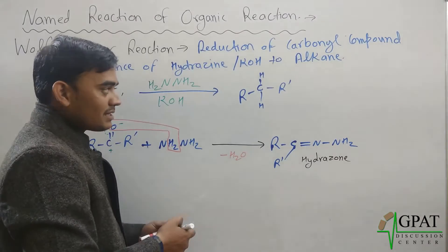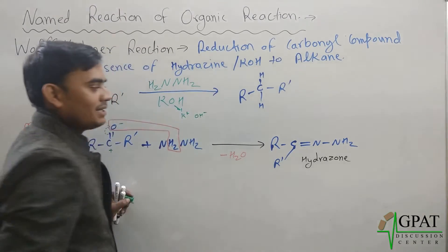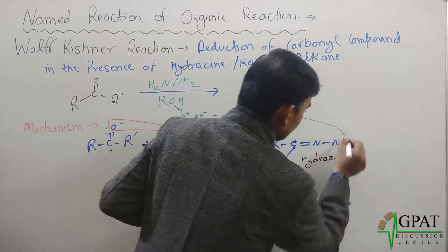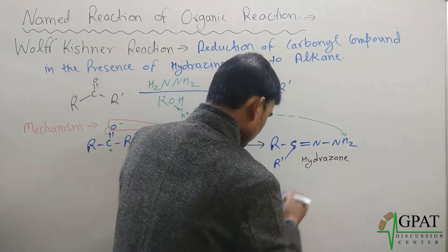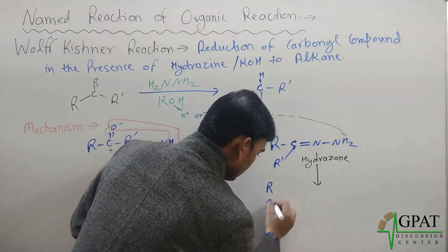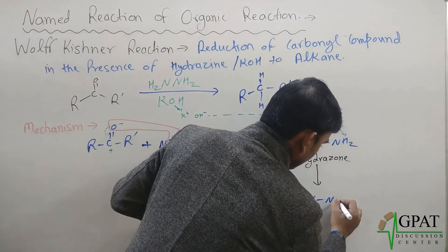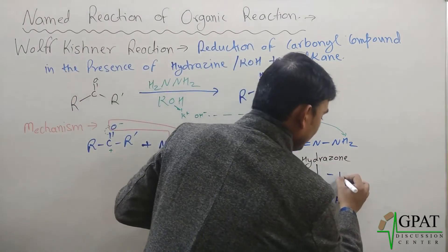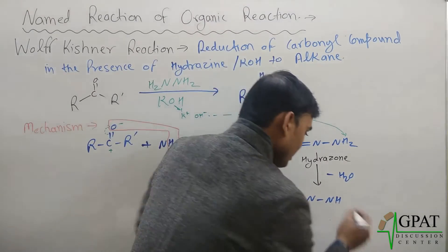Since the medium is basic, KOH dissociates into K⁺ and OH⁻. This OH⁻ will attack one hydrogen on the hydrazone nitrogen, removing it. A by-product of water is formed, and since one hydrogen ion is removed, a slight negative charge forms on the nitrogen.